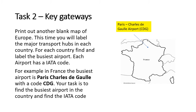For example, Paris Charles de Gaulle airport's code is CDG, which obviously stands for Charles de Gaulle. So then you've got to make sure you put it in the right place on the map. As you can see with the arrow, that is where Paris is and that's where Paris Charles de Gaulle airport is. You repeat the process for all the European countries on the map.